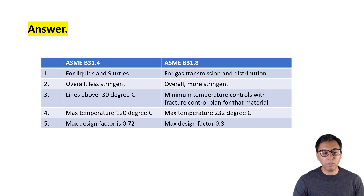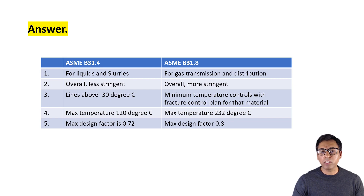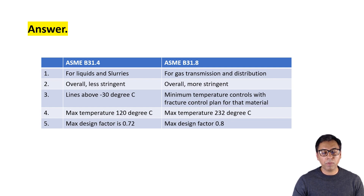In B31.4, the temperature limit is up to minus 30 degrees Celsius. While in B31.8, temperature can be controlled and can go below minus 30 degrees Celsius by confirming a fracture control plan for the particular pipeline material.